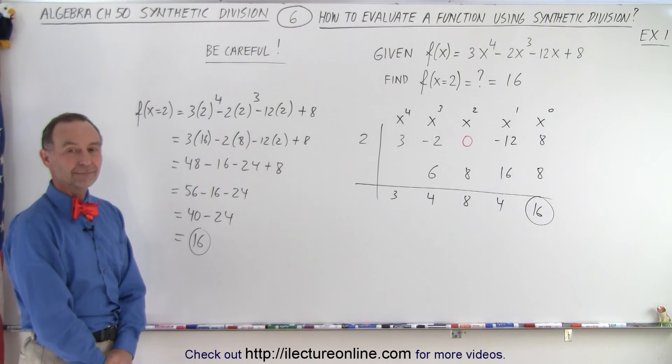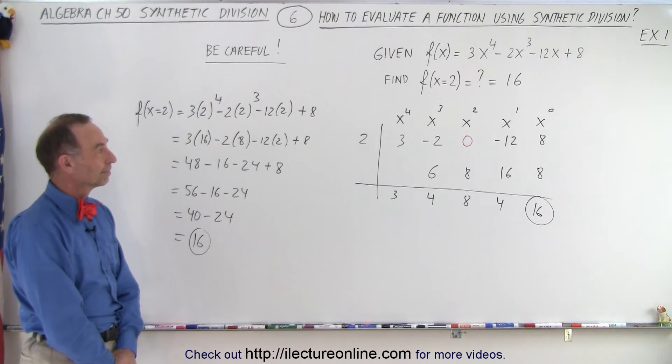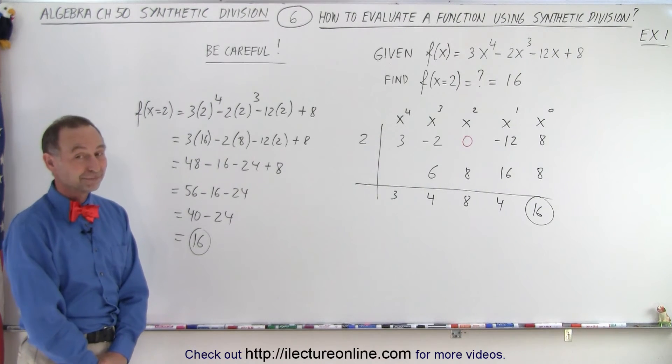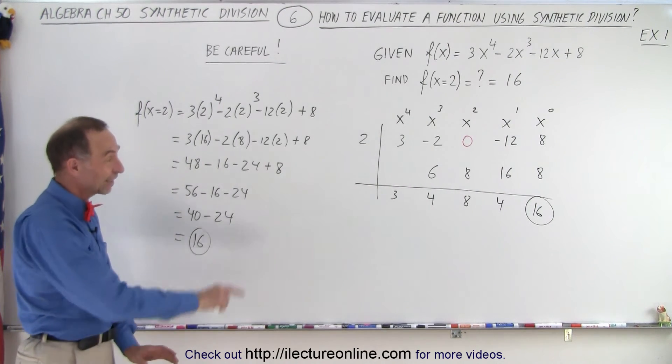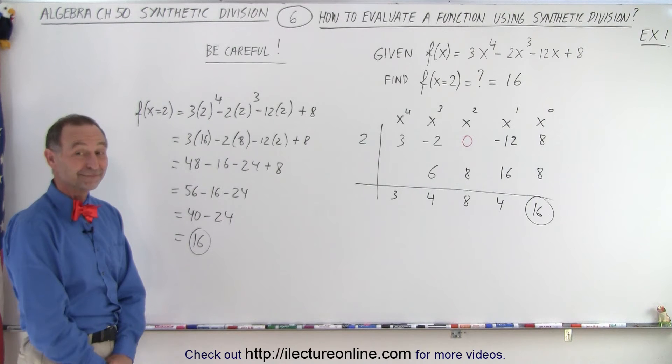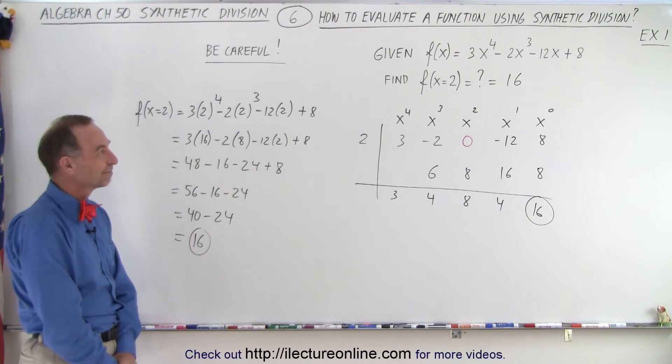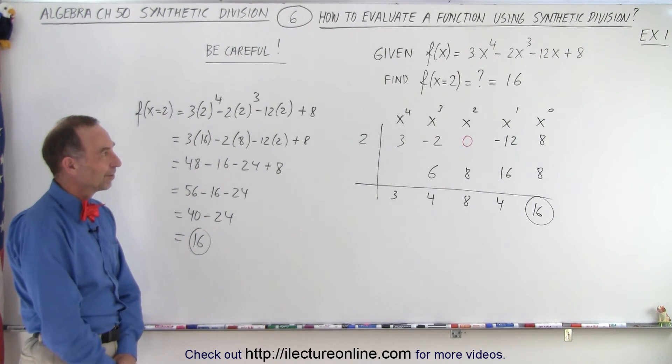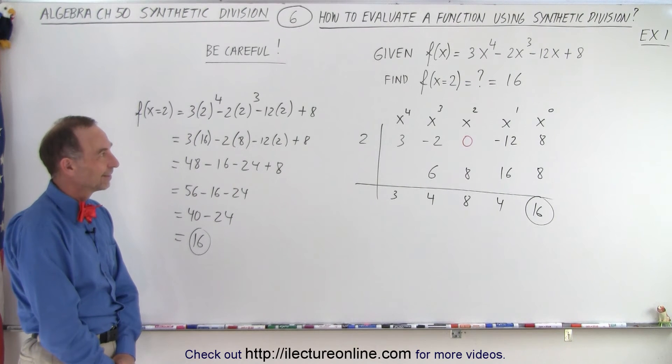Those coefficients, those numbers there, they're actually the coefficients if you were to divide the original f of x by x minus 2. That is correct. And you get the remainder 16. So if you were to divide that with a remainder, does that mean all the other problems you ever did, if they have a remainder, what if the remainder was 0? Would that be anything?